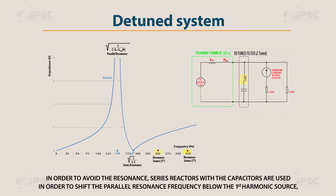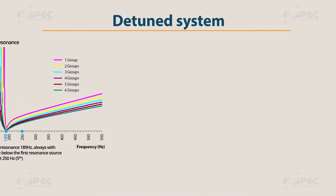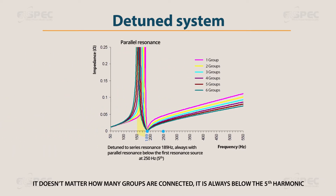In order to avoid resonance, series reactors with the capacitors are used to shift the resonance frequency below the first harmonic source — below the 5th harmonic. In this example, the frequency is 145 Hz. It doesn't matter how many groups are connected; it always remains below the 5th harmonic.